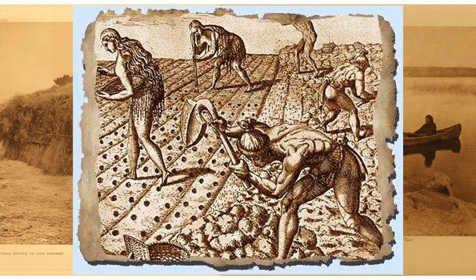Farming! One of the biggest changes from the Paleolithic era to the Neolithic era is the beginnings of agriculture. Agriculture is the planting and harvesting of crops. So people are beginning, instead of just picking whatever they can find, to really change their environment — to plant what they want and grow what they want. So we start having fields and farms.